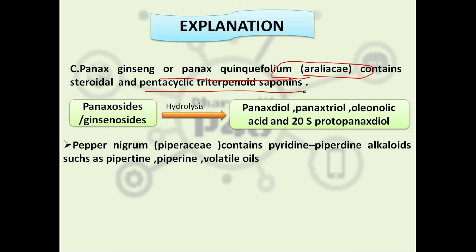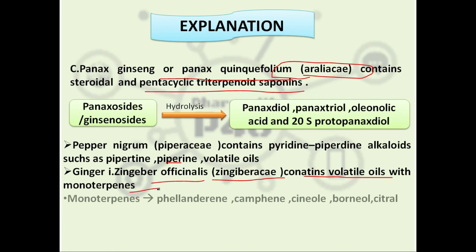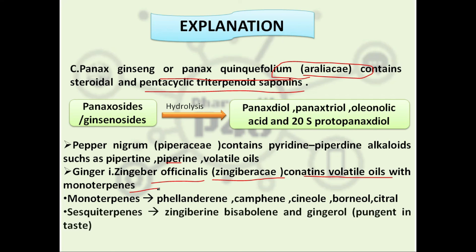For additional context: Piper nigrum, belonging to the family Piperaceae, contains piperidine alkaloids such as piperitine and piperine, along with volatile oils. Ginger belongs to Zingiber officinale of the family Zingiberaceae and contains volatile oils with monoterpenes, sesquiterpenes, and phellandrines.